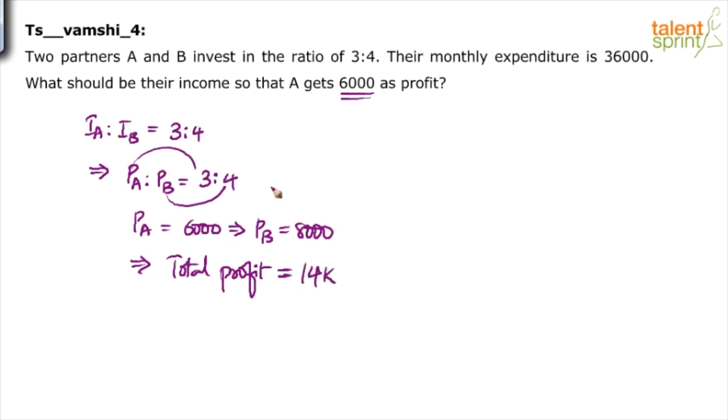Their monthly expenditure is 36,000 rupees. What should be their income? You know that income is equal to expenditure plus profit. Their expenditure is given as 36,000. So 36,000 expenditure plus 14,000 profit which comes out to be 50,000.